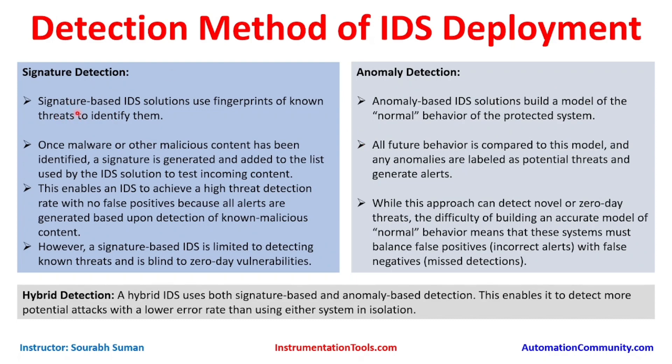That analysis can be done based on signatures or based on created rules. There are basically three detection methods in IDS: signature-based detection, anomaly-based detection, and hybrid detection.